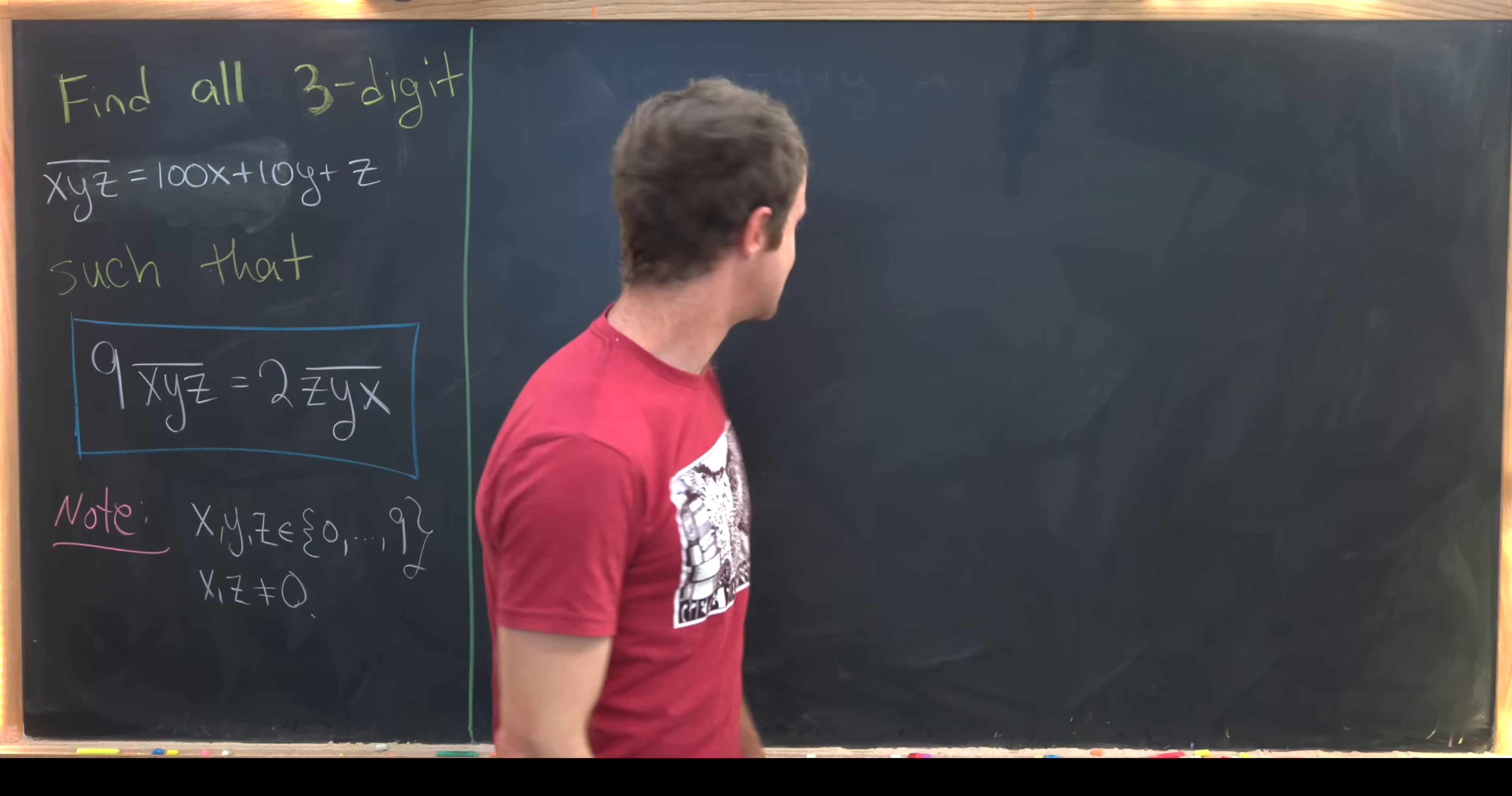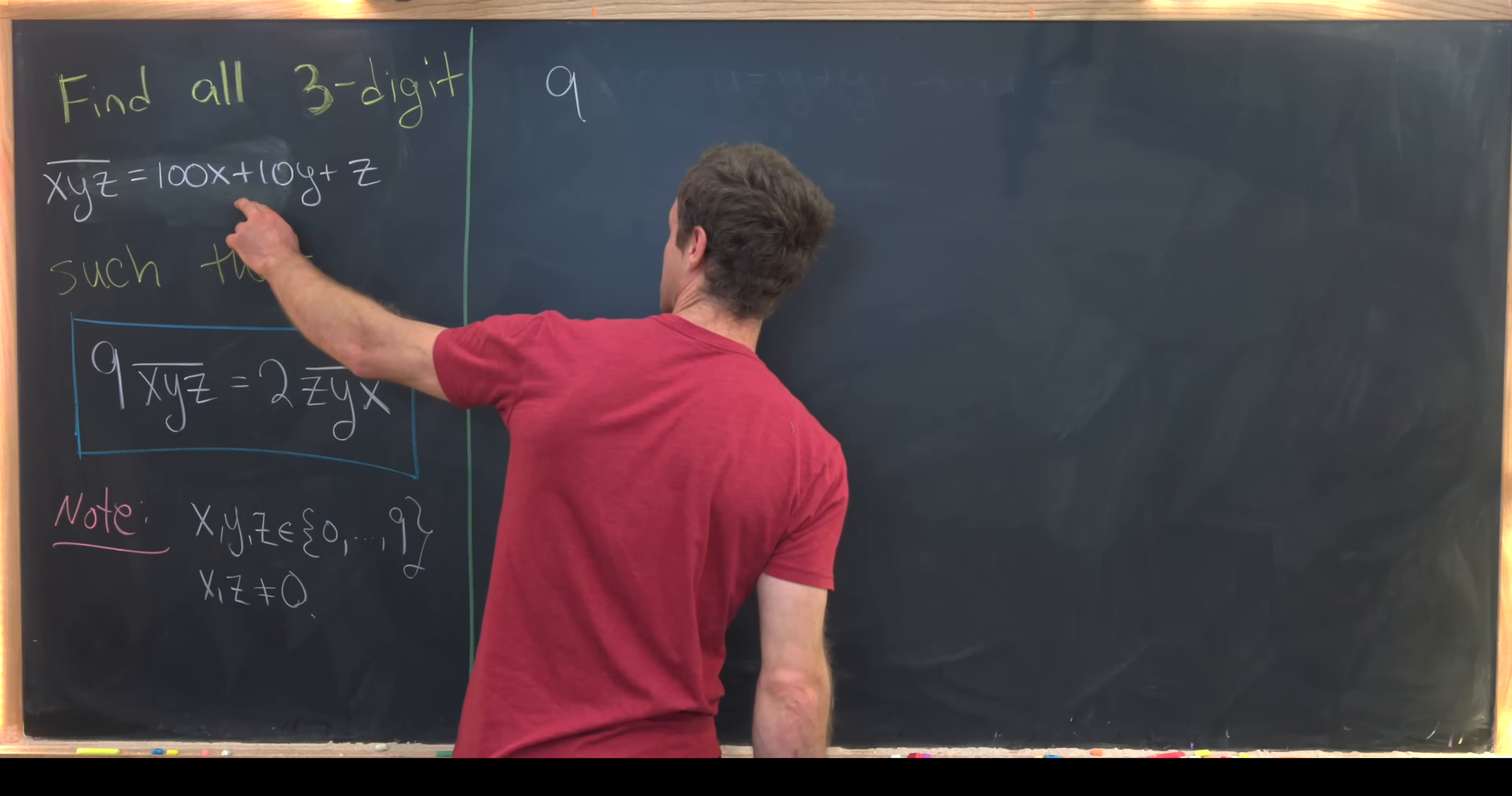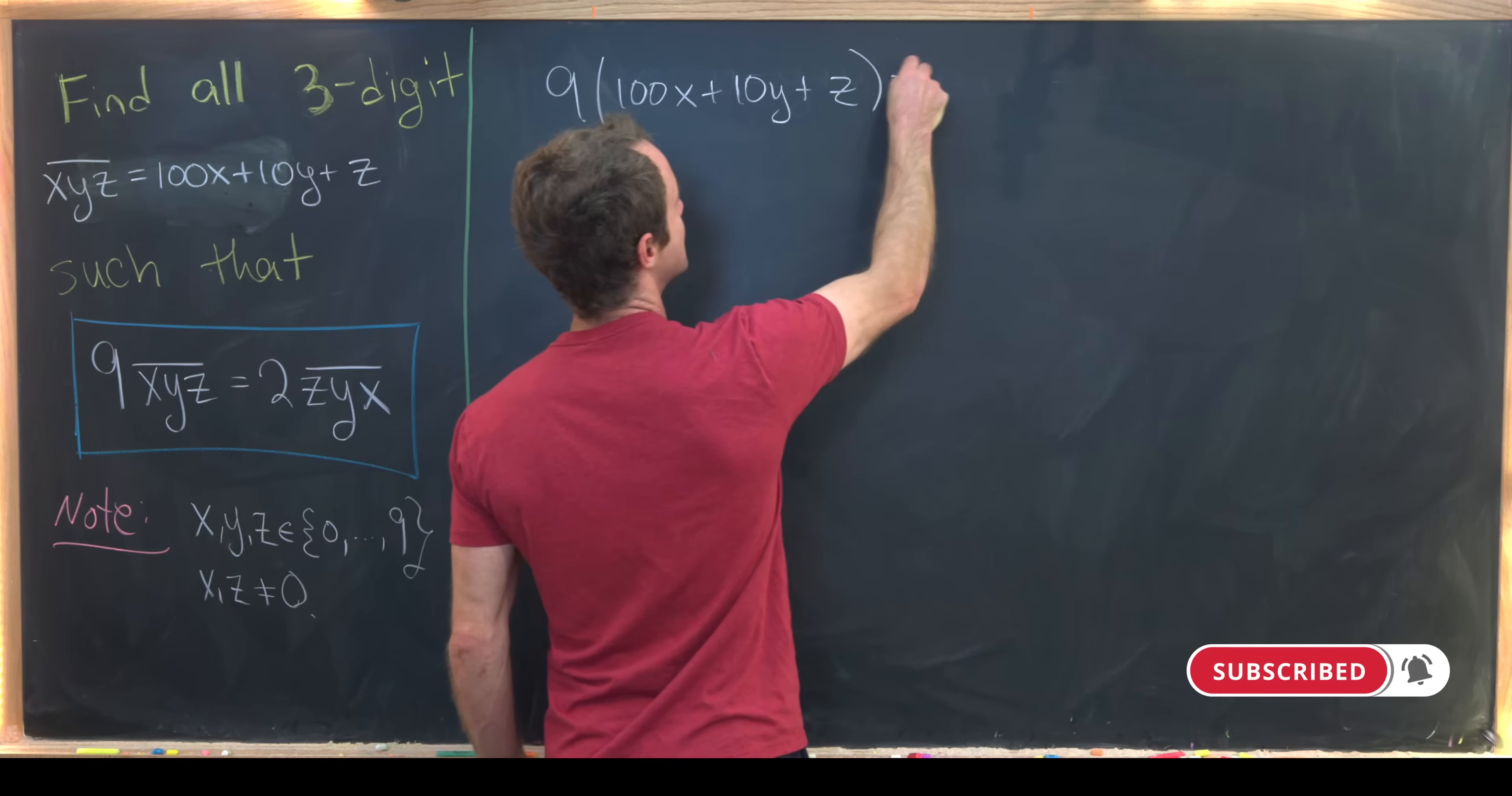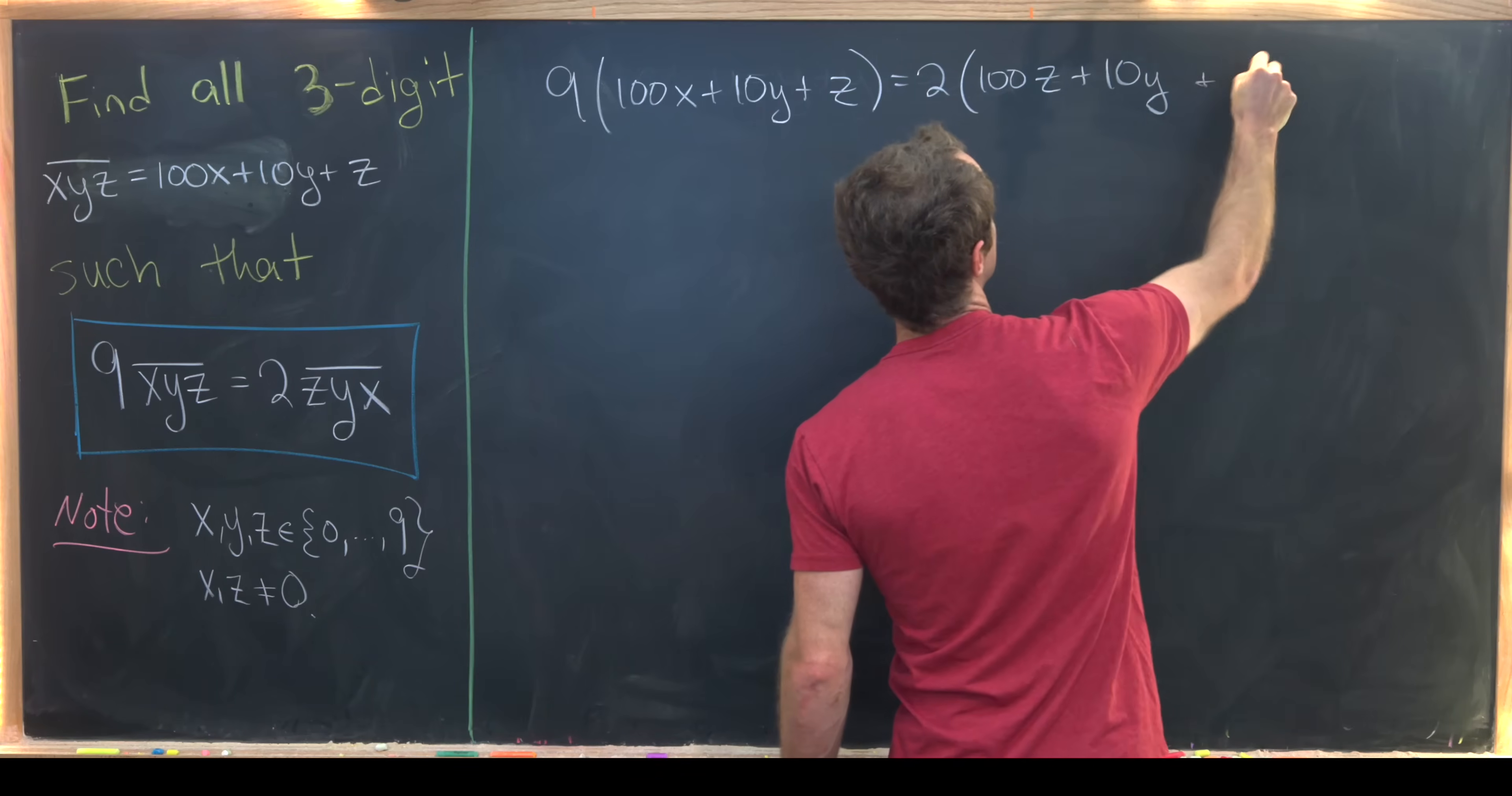Okay so let's get into this and see what we've got. We can take this blue boxed equation and rewrite it using our decimal expansion as follows. This is going to be 9 times 100x plus 10y plus z is equal to 2 times 100z plus 10y plus x.